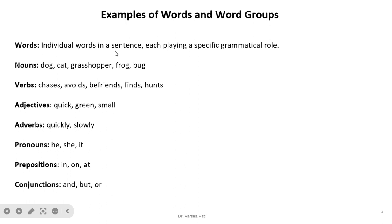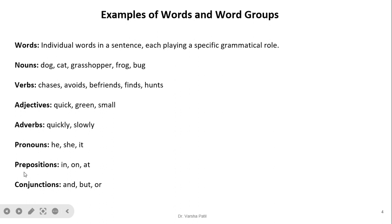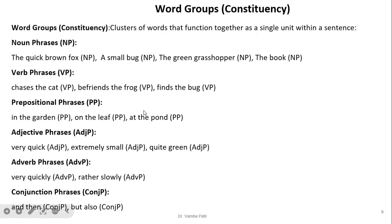Words are individual words in a sentence, each playing a specific grammatical role. For example: nouns, verbs, adjectives, adverbs, pronouns, prepositions, and conjunctions. These are the variety of word types we use in a language — specifically for the English language.